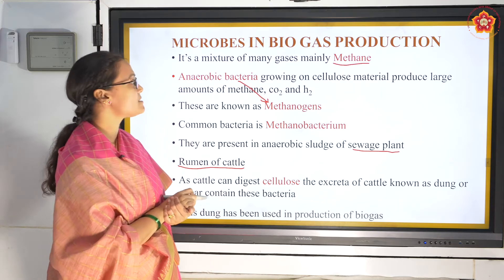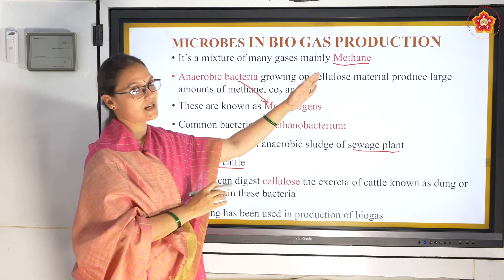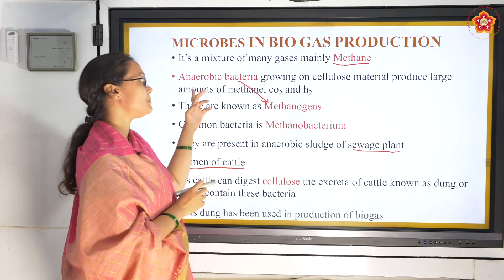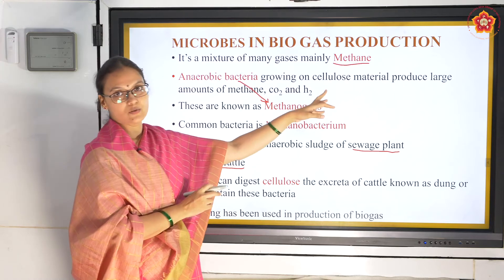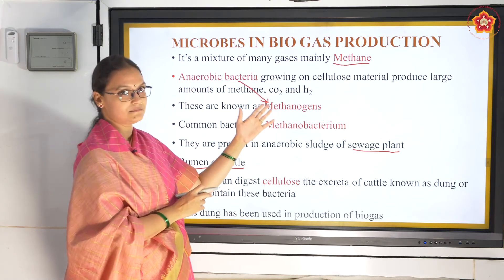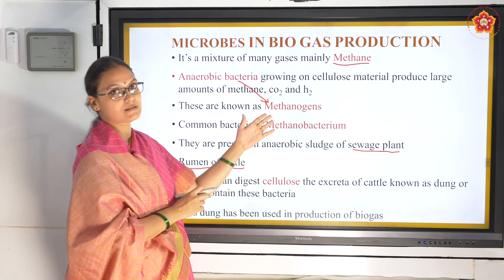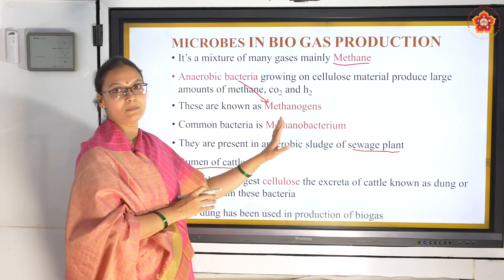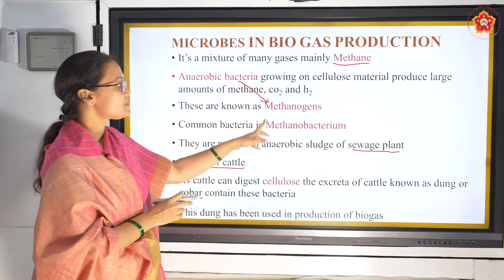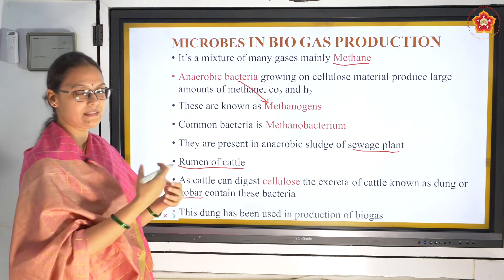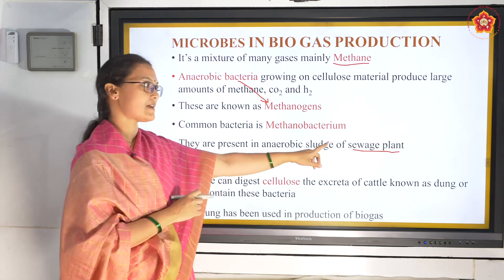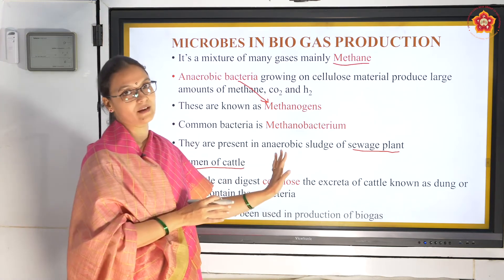So biogas is methane, produced when anaerobic bacteria act on cellulose material. These anaerobic bacteria are called methanogens, the common bacteria being Methanobacterium, present in the stomach of cattle or in the digester tanks of sewage plants.